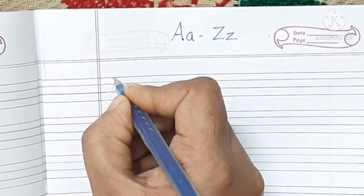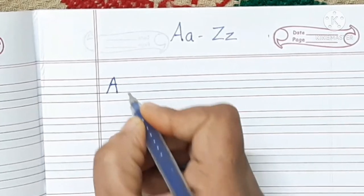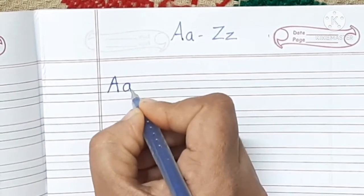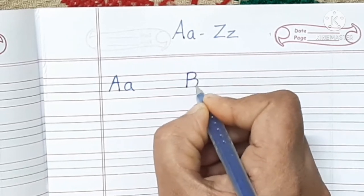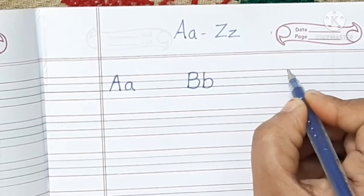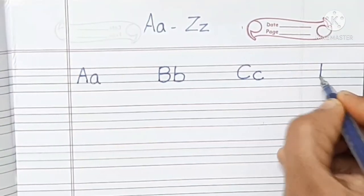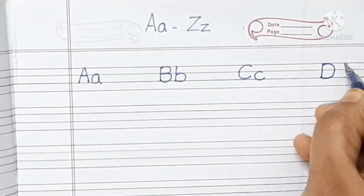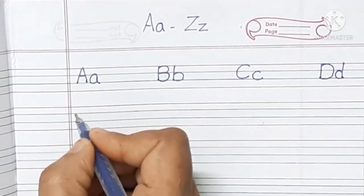First letter is capital A small a, capital B small b, capital C small c, capital D small d, capital E small e.